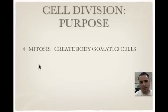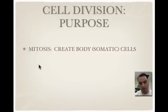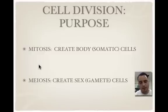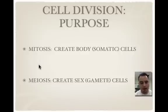The purpose of cell division: mitosis is really to create body cells, also called somatic cells. A way to remember that is think 'mito' — point to your toe and it reminds you mitosis makes body cells. We also have meiosis, which makes gamete cells. A way to remember that is think 'sperm and egg made me' — so meiosis is making sex cells, also called gamete cells.